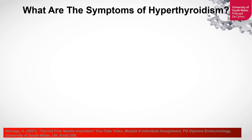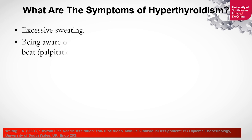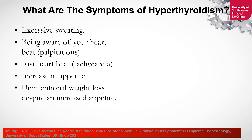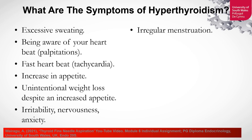What are the symptoms of hyperthyroidism? Excessive sweating, being aware of your heartbeat, which is also called palpitations. Your heartbeat may beat faster, which is called tachycardia. Unintentional weight loss despite an increased appetite. Irritability, nervousness, or anxiety. In females, the menstrual cycle may be affected.